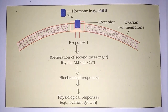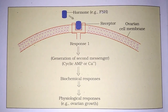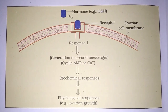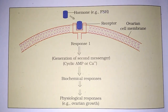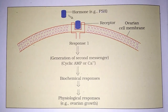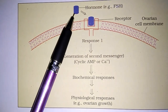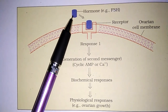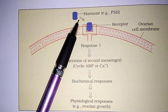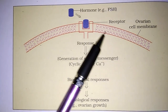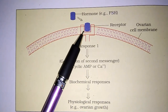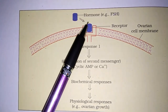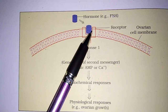Hamara jo lower part hai body ka, wahan tak bhi pohunchte hai aur apna function perform karte hai. Ab ye diagram hai hamara peptide hormone ka. Yahan receptor kahan hai — membrane par present hai. Toh peptide hormone membrane bound receptor ke saath bind hoke kis tarah se function karte hai, yehi hum ismein dekhenge. Ye hormone hai — for example, follicle stimulating hormone ek peptide hormone hai. Follicle stimulating hormone ka act karta hai, uske target organ hote hai ovary. Toh iska matlab jo ye plasma membrane hai, ek ovarian cell membrane hai. Yahan receptor present hai.